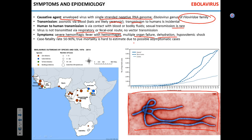It was demonstrated that in Ebola patients, simple treatment with IV fluids may decrease mortality rate from 90 to 10 percent. One of the symptoms is diarrhea, which is another reason why fluid supplementation can be so valuable. The case fatality rate is 50 to 90 percent.